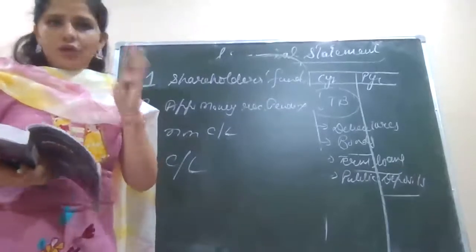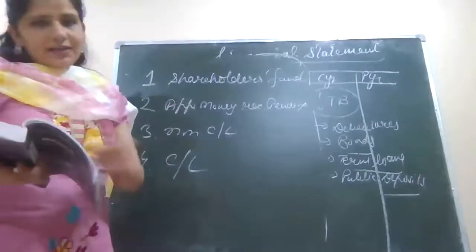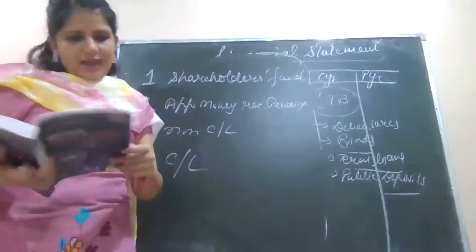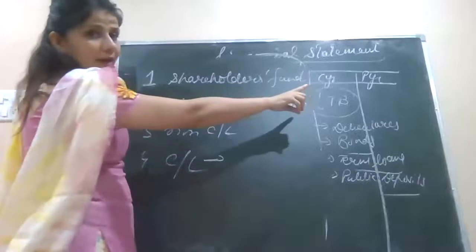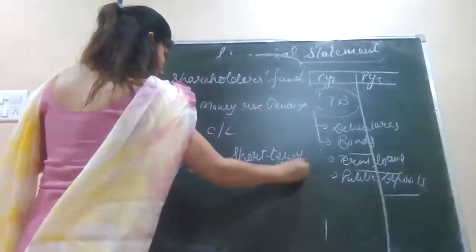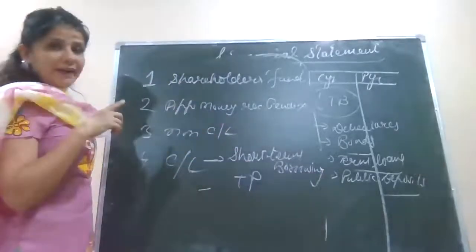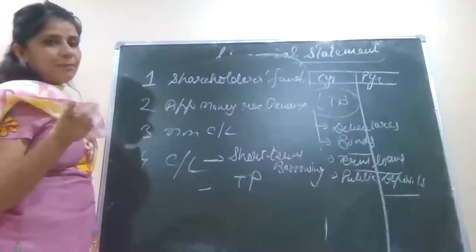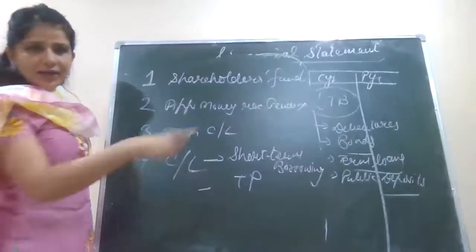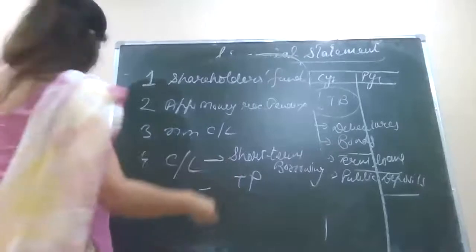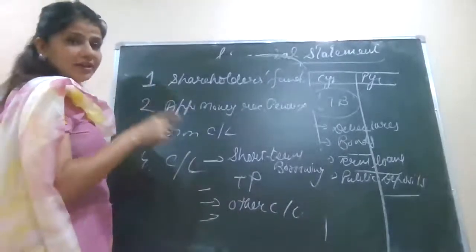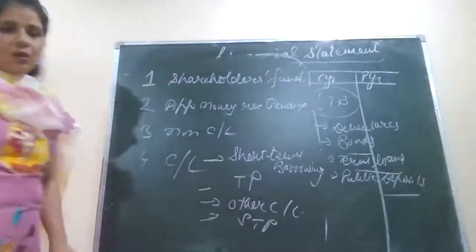Now we have arrived at current liabilities. Current liabilities are not a new term for you — these are liabilities which are to be paid within a period of one year or less. The subheadings under current liability are: short-term borrowing is the first subhead, then trade payables, then other current liabilities, and finally short-term provisions — the equivalent of long-term provisions for the current side.